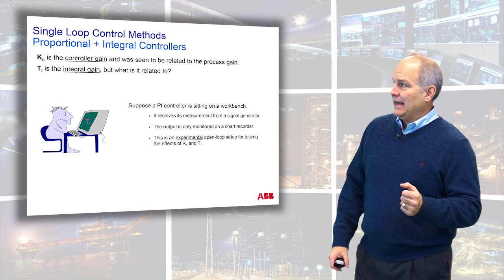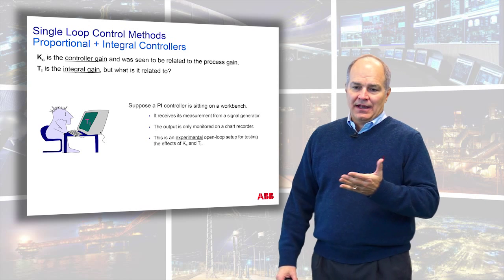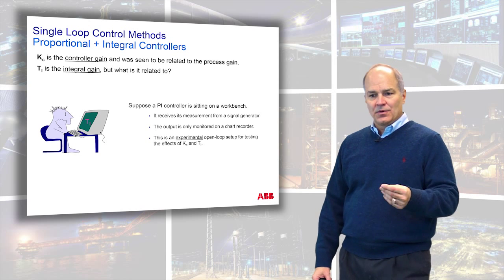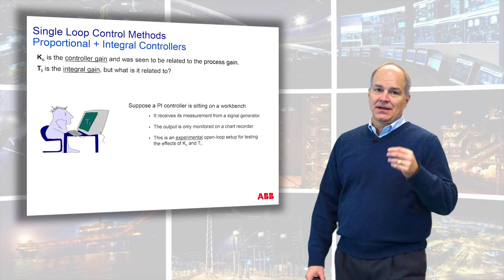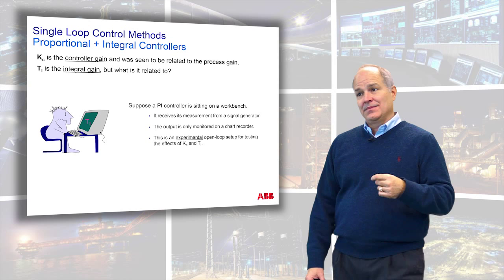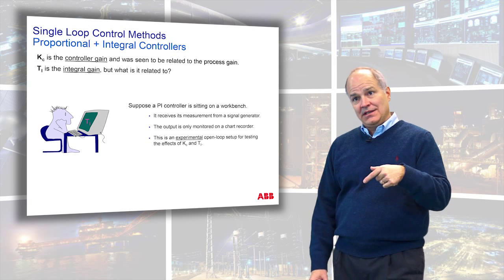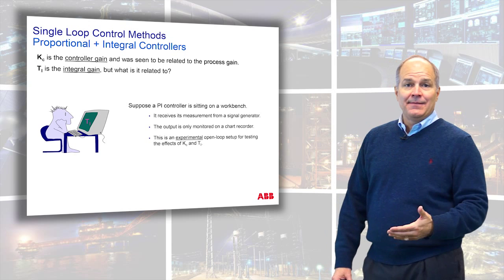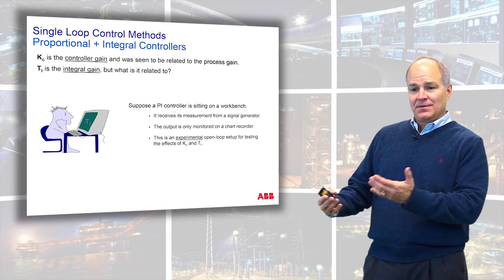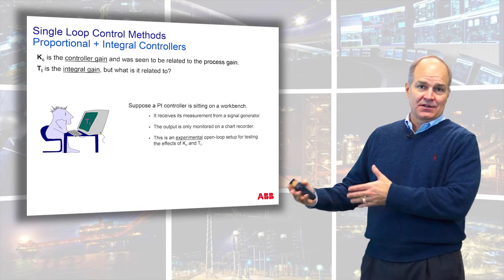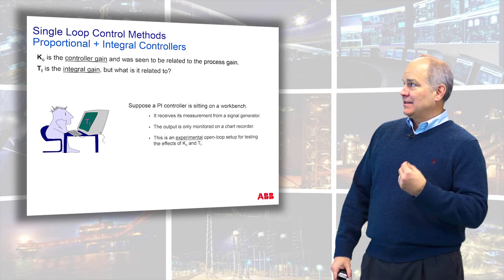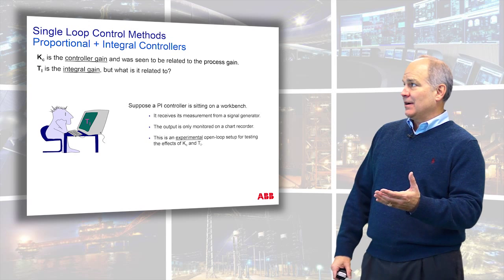Controller gain Kc - sometimes called G, sometimes K, sometimes K-sub-C. Using ISA naming conventions, K represents gain and the subscript C represents controller. How does controller gain relate to the process?